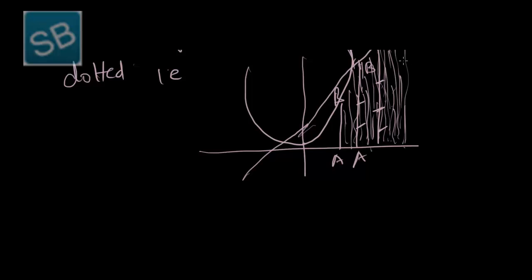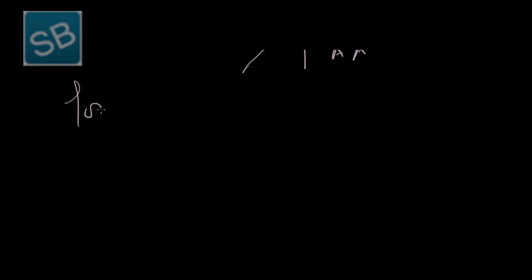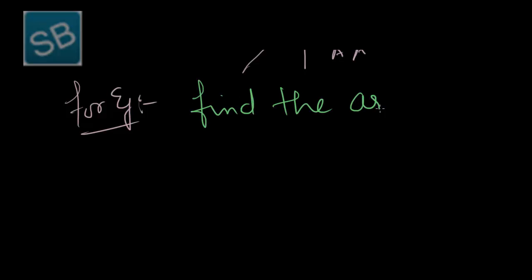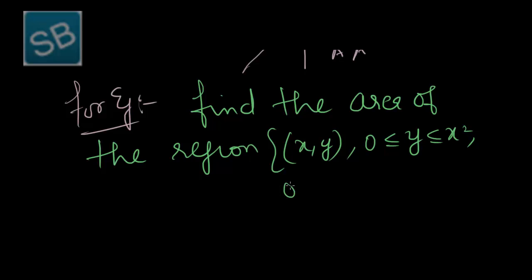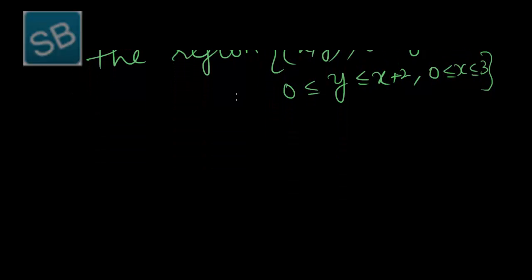These points form the set and that is the required region where the inequality is satisfied. For example: find the area of the region of ordered pairs (x, y) where 0 less than equal to y less than equal to x squared, 0 less than equal to y less than equal to x plus 2, and 0 less than equal to x less than equal to 3. So we have two curves and one line.